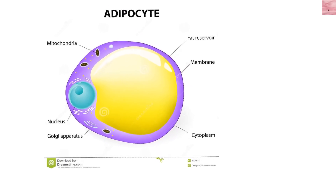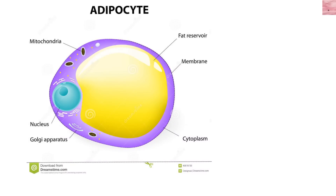Let's look at some graphics of an adipocyte. You can see in this drawing that the whole thing depicts one cell. It's a cell with a nucleus, mitochondria - everything a typical cell has - except for this big yellow mass in the middle where the fat is stored. It's a fat reservoir. These fat cells can get big or small depending on how much fat is stored.